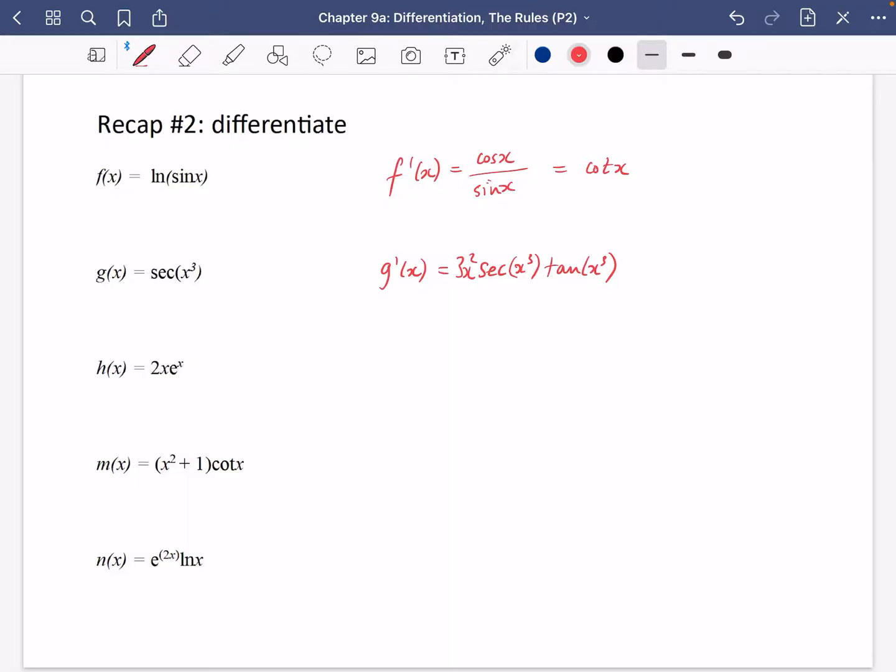This one is going to be an application of the product rule. Nice easy one actually. So u is 2x meaning u dash is 2. v is e to the x. So v dash is e to the x. And you're going to have that cross shape for the product rule there. So h dash x is going to be 2x e to the x plus 2 e to the x.